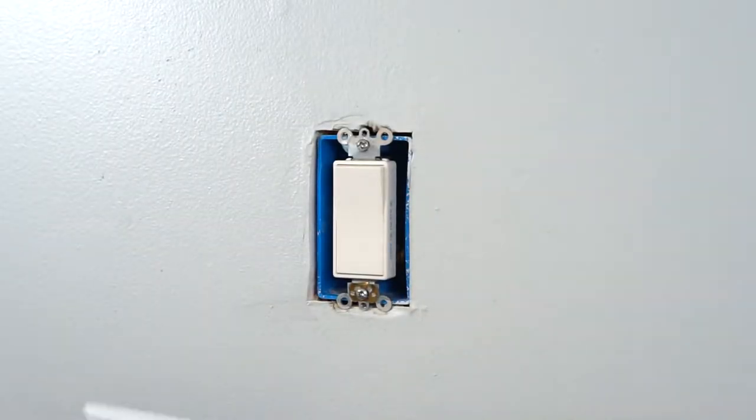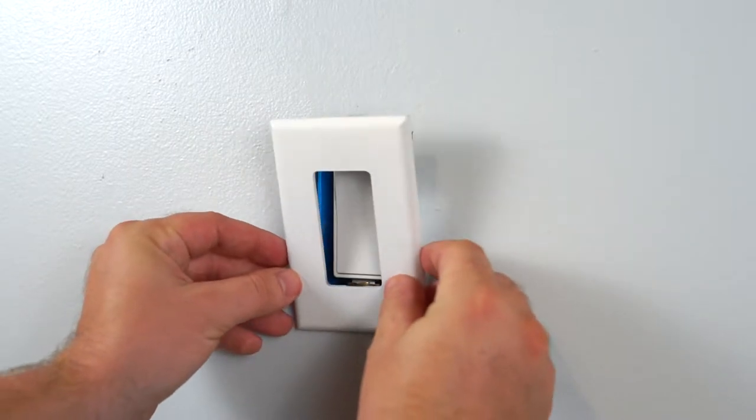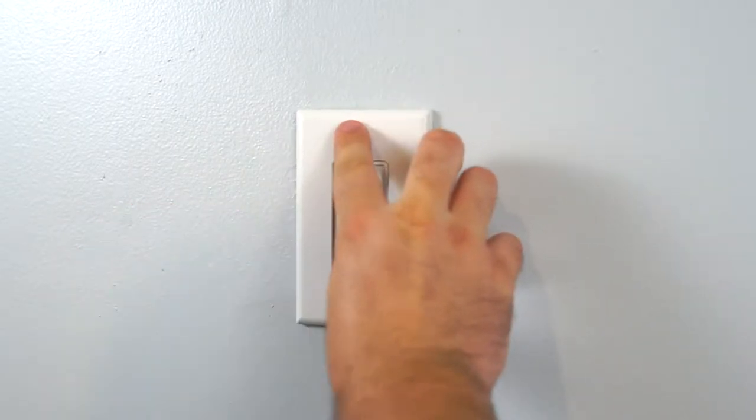To install the single gang, align the bottom prong with the screw hole, tilt forward aligning the top and press on.